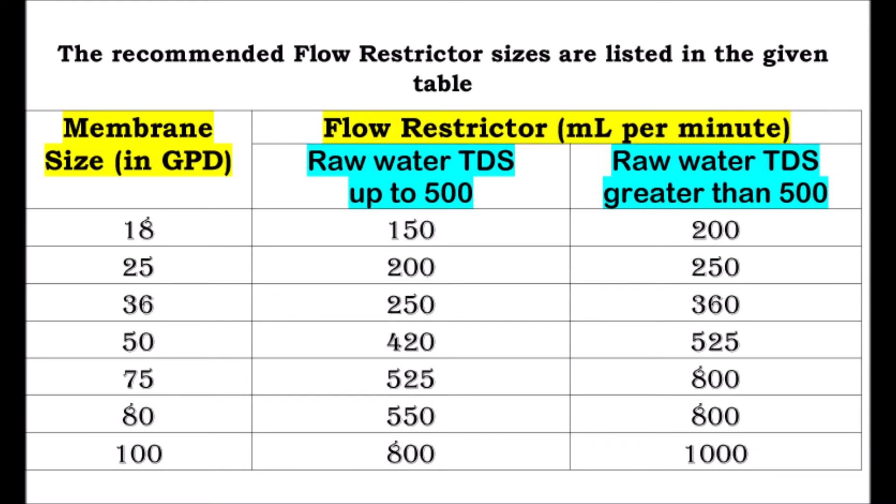The RO membrane and flow restrictor capacity must be matched to keep a proper balance between water wastage and purification quality. If they are not matched, this can cause excessive wastage of water or may reduce the life of the RO membrane. If we use a lower capacity flow restrictor for a higher capacity membrane, it will result in early choking of the RO membrane. And if we use a higher capacity flow restrictor, it will result in higher wastage of water.